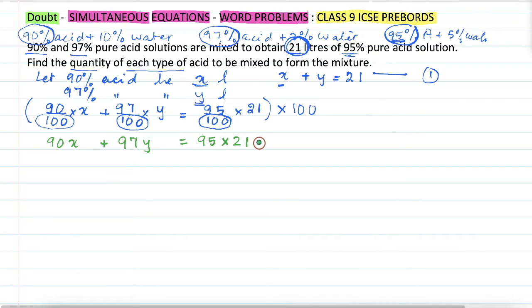Now, how much is 95 into 21? 21 fives is 105, carry 10. 9 multiplied by 21 is 189. So it will be 1995. So this is our equation 2.